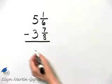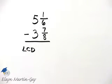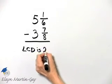So what is the least common denominator with denominators of 6 and 8? The least common denominator is 24.